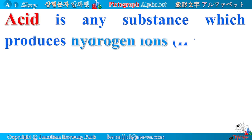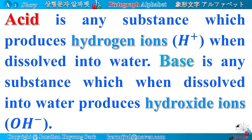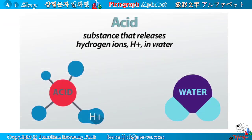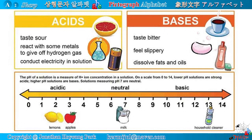Acid is any substance which produces hydrogen ions when dissolved into water. Base is any substance which when dissolved into water produces hydroxide ions. Acid is a substance that releases hydrogen ions in water. The pH of a solution is a measure of hydrogen ion concentration in a solution. On a scale from 0 to 14, lower pH solutions are strong acids and higher pH are bases.